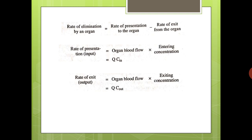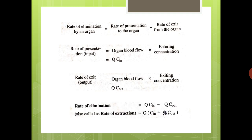The flow of blood is constant into and out of the organ because it depends on our heart rate, not on the liver. Substituting into the equation: rate of elimination = Q × CIN − Q × COUT = Q × (CIN − COUT). This expression is known as the rate of extraction.